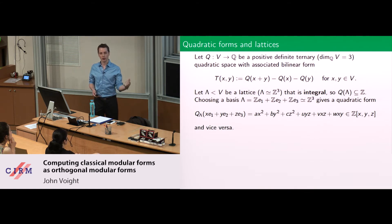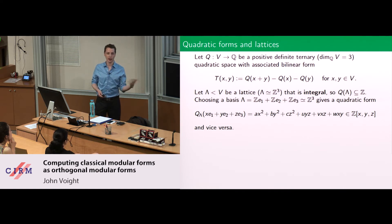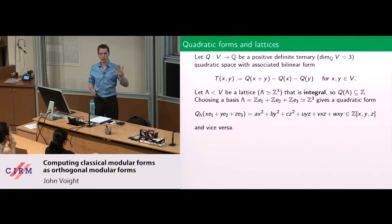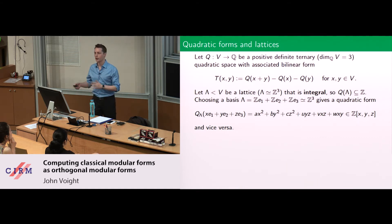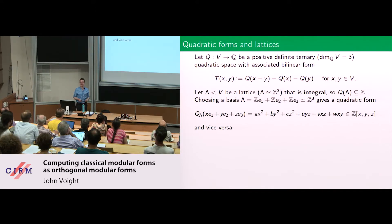There's a vice versa: if someone gave you an integral positive definite ternary quadratic form and you want to make a quadratic space with the lattice, you just tensor with Q. You take E1, E2, E3 to be the standard basis of Q-cubed. I will move often back and forth between quadratic spaces and lattices. The ability to move back and forth between them leads to the most insight.